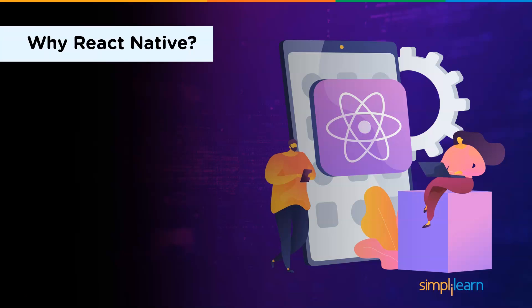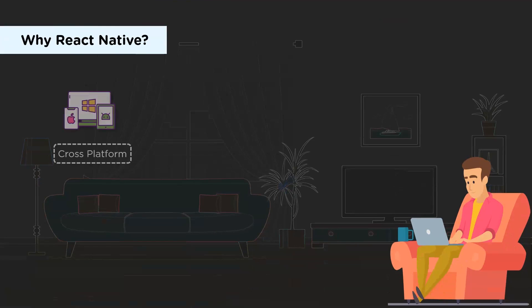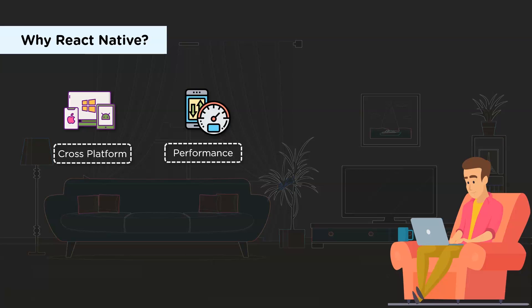Why is React Native used? First up is cross-platform — applications can easily be run on Microsoft Windows, Linux, and Mac OS. You can build your code base once and then run it on any platform, as opposed to software built natively for a specific platform. Next up is performance. React Native apps are compiled into natively written code, which enables them to work on both operating systems and function the same way on both platforms with no lags at all.